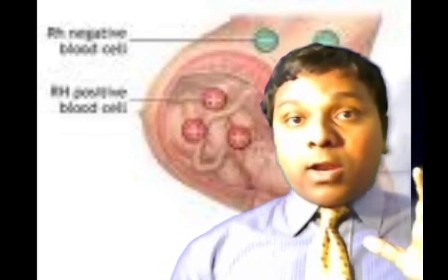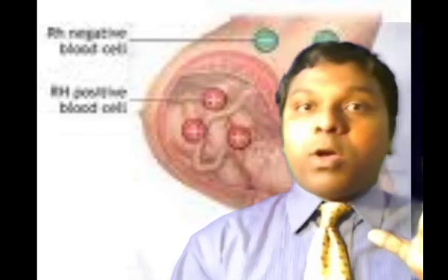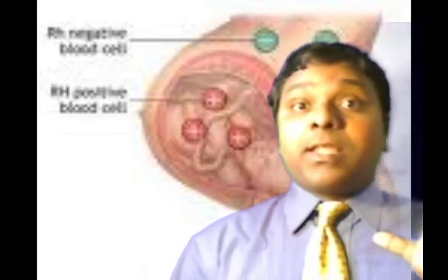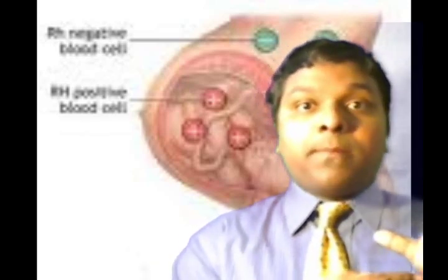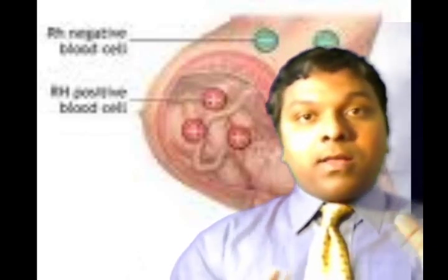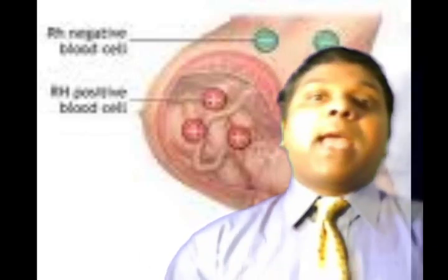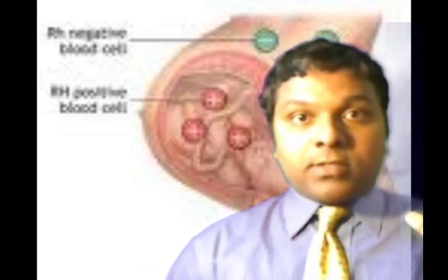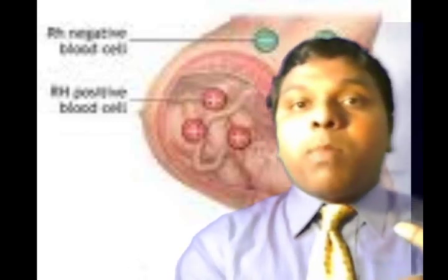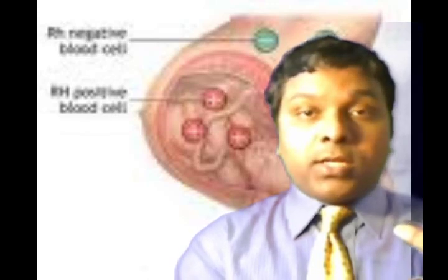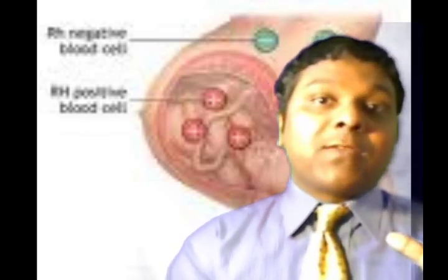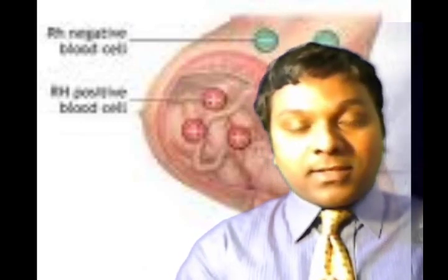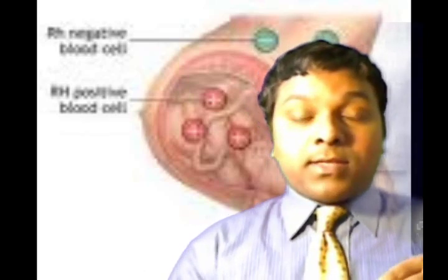So the mother has RH negative and the baby has RH positive. During pregnancy, the red blood cells from the fetus can get into the mom's bloodstream through the placenta. That is when the incompatibility happens — when the mom is RH negative and the RH positive fetal cells enter into the maternal circulation, those fetal red blood cells will be treated as foreign bodies.